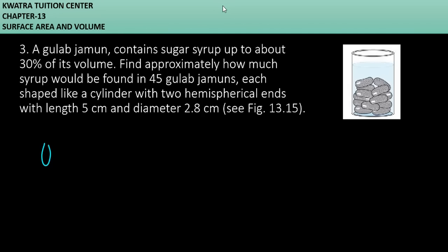So let's see what's given here. Gulab jamun is not regular, so what should we do? We have to divide it into several parts. And we have already told that it's a cylinder, and both sides are hemispheres.